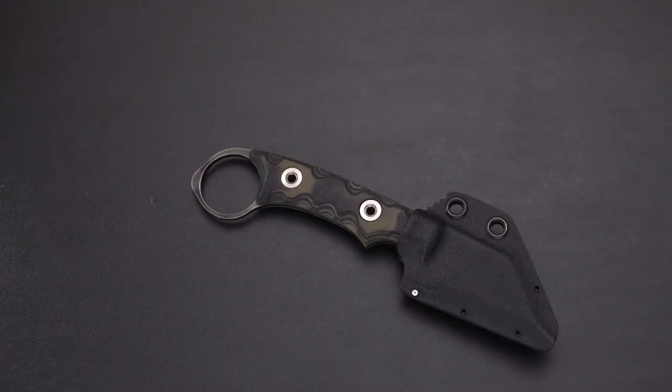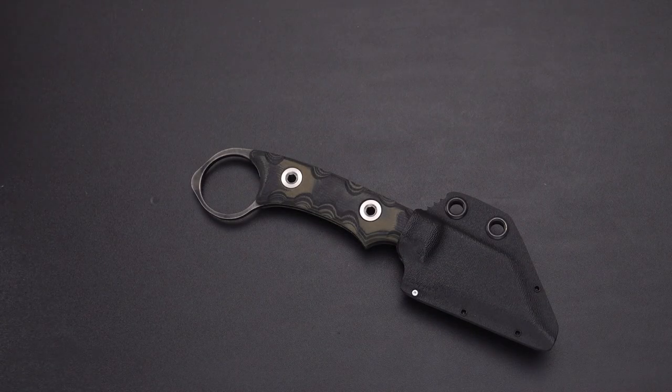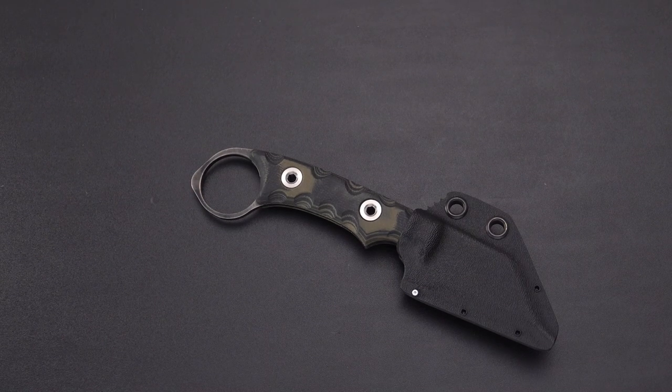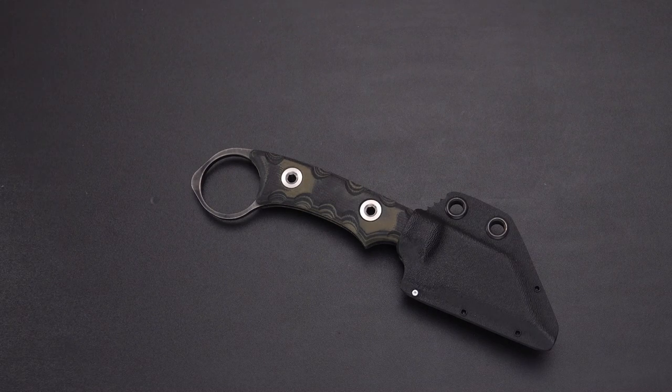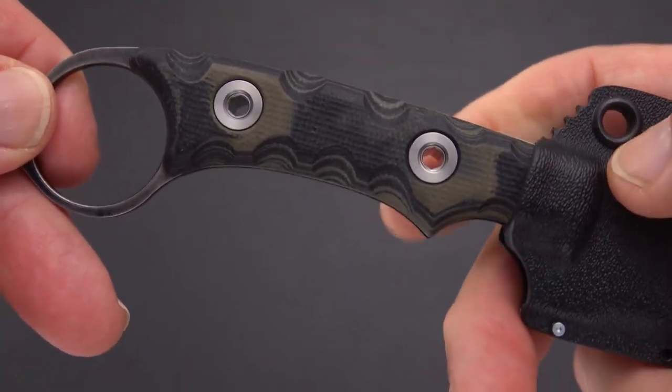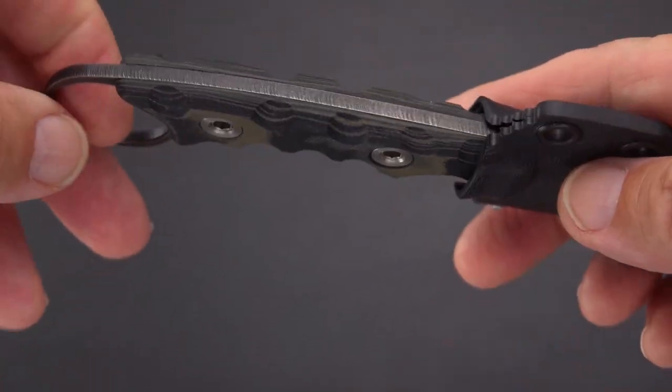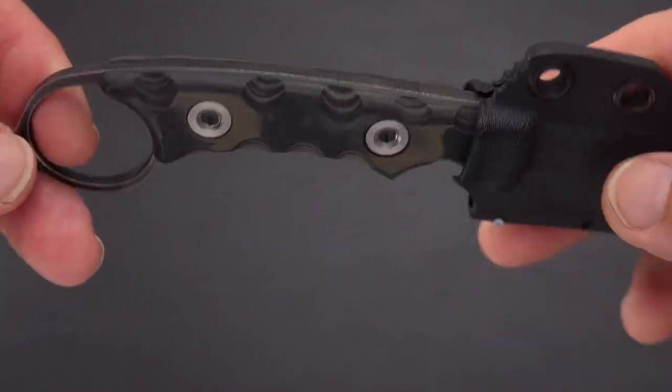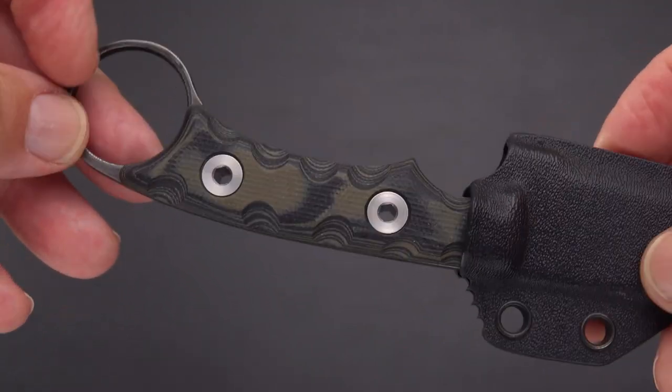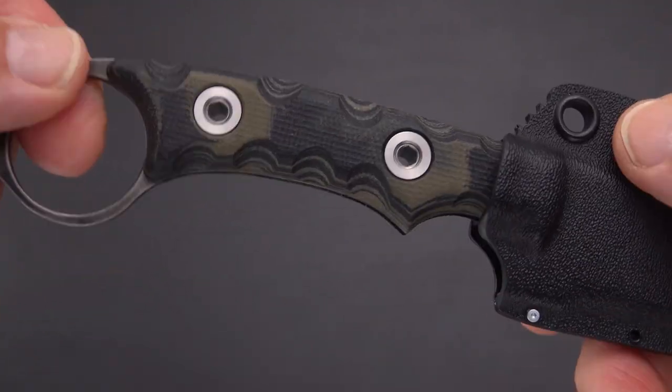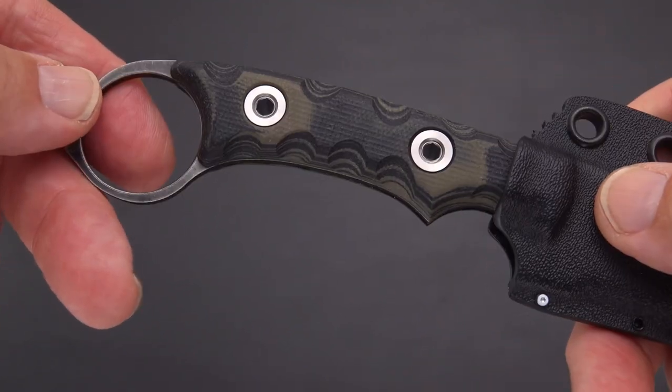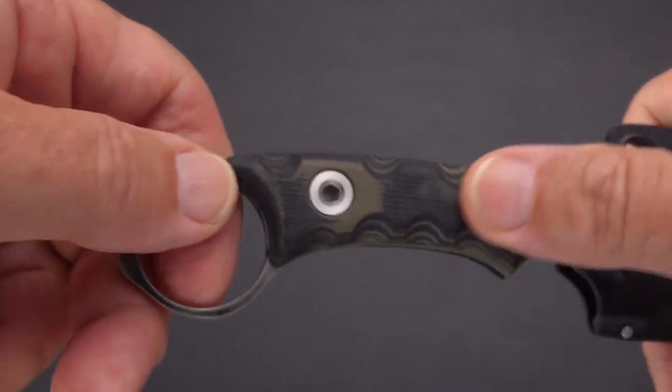These screws have a name. Tim refers to these as his lashing screws because when they're in place you can see straight through and you can put a cord through there. You can use them to lash the knife to a pole or post, make a makeshift spear—very survival oriented—or any other purpose that you feel that you need to put a cord through there.